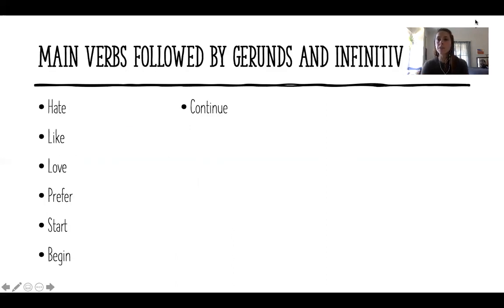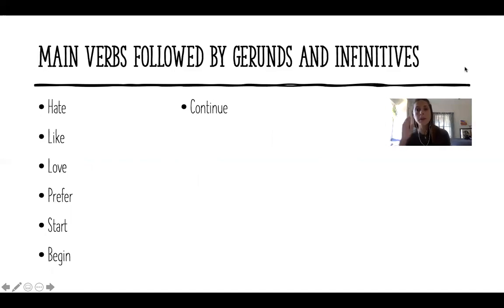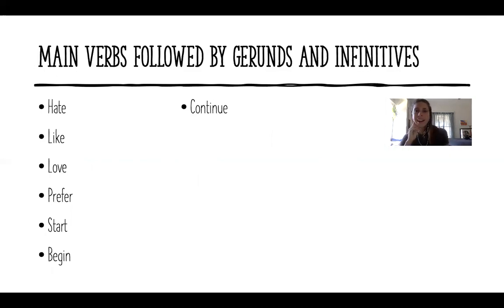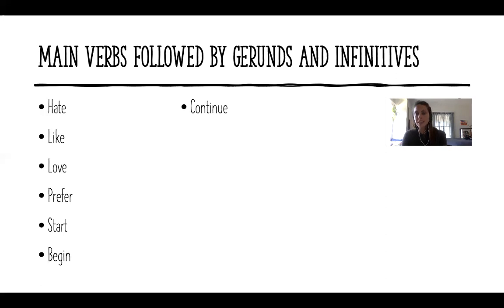Now there are main verbs that can be followed by both a gerund or an infinitive. Hate: 'I hate speaking in public' or 'I hate to speak in public' — totally fine. Like: 'I like running' or 'I like to run.' Love: 'I love to dance' or 'I love dancing.' Prefer: 'I prefer to watch' or 'I prefer watching.' Start: 'I started to try' or 'I started trying.' Begin: 'I began to talk' or 'I began talking.' Continue: 'I continued to see him' or 'I continued seeing him.' Both are fine.